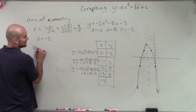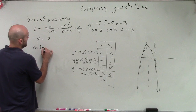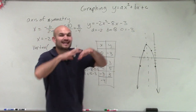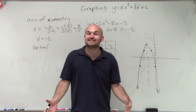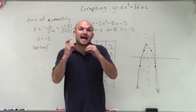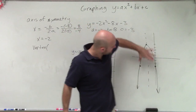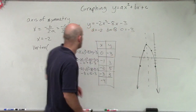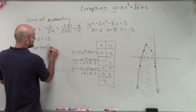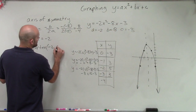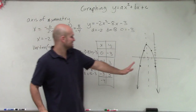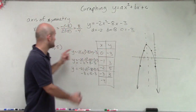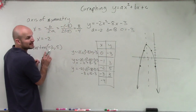Now let's look at the vertex. Since our a is negative, the graph opens down, which means it has a maximum value — there is no minimum because the graph keeps going downward. This maximum value is at negative 2 comma 5. Notice the x-value of the axis of symmetry is the same as the x-value of the vertex.